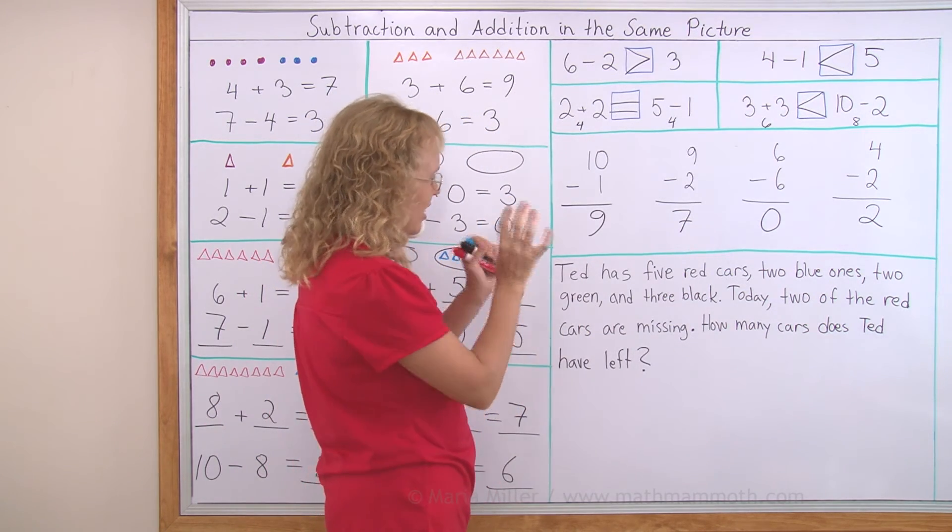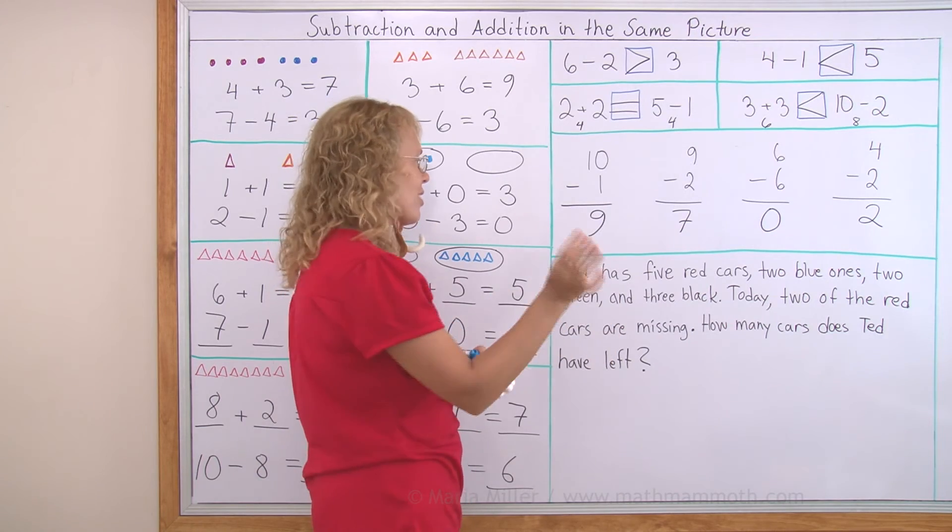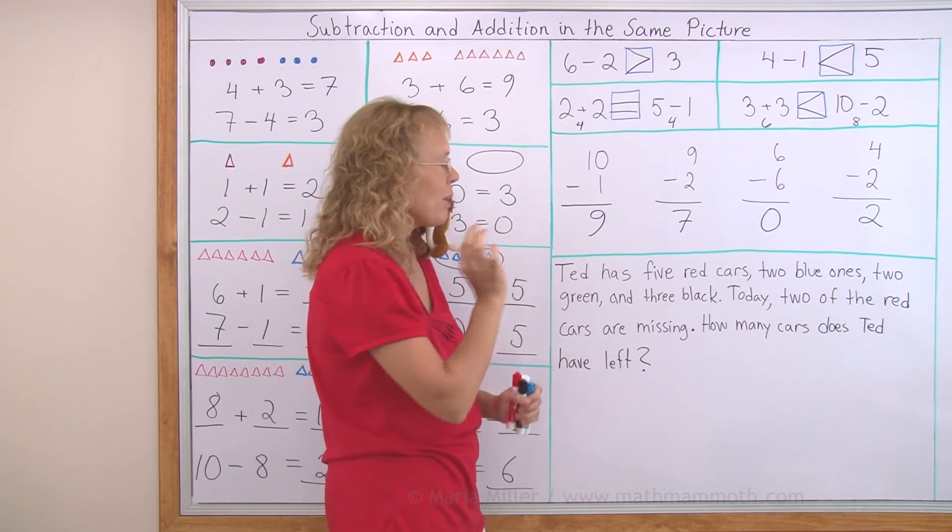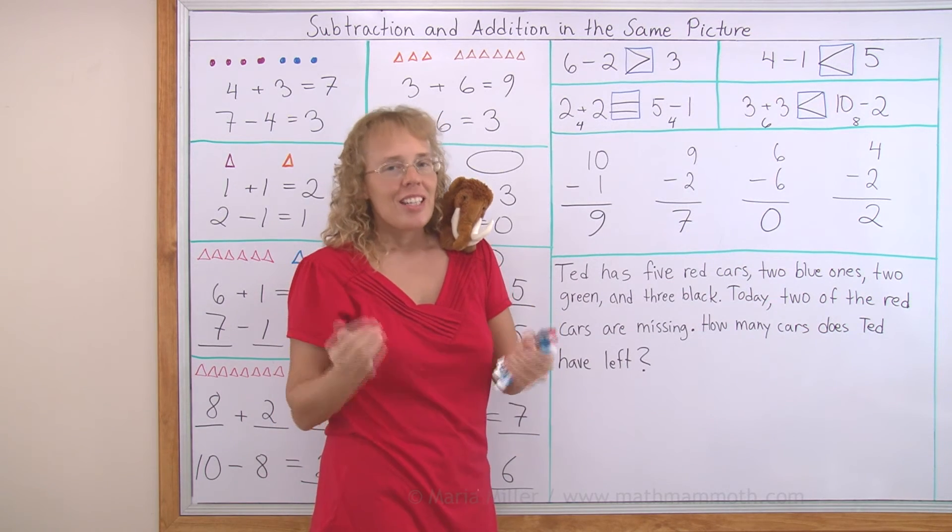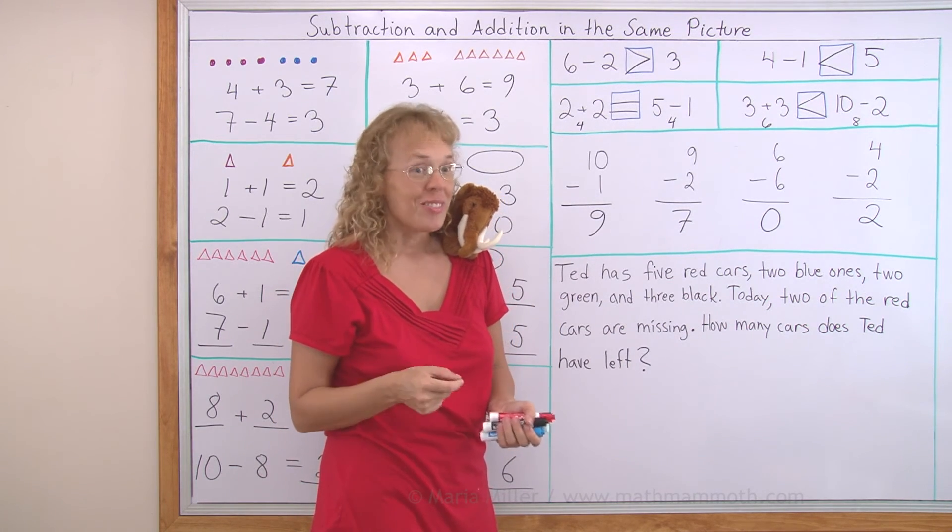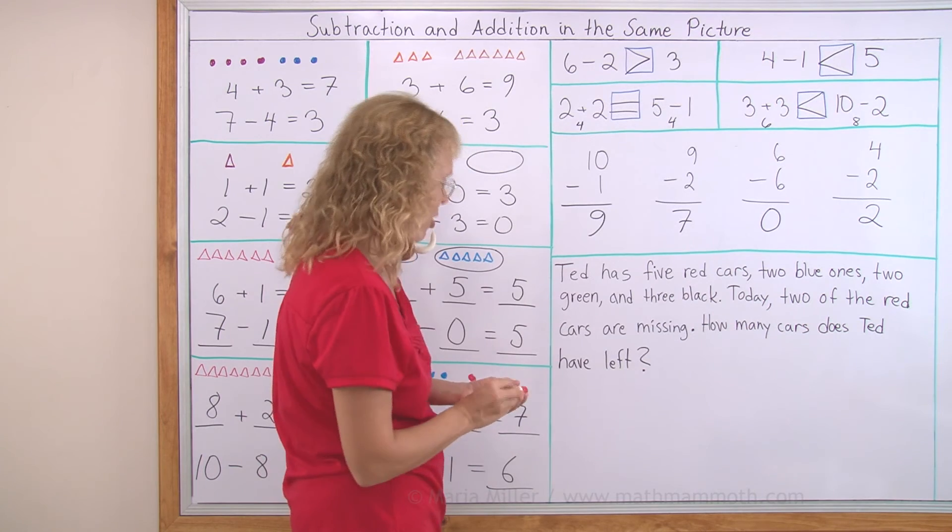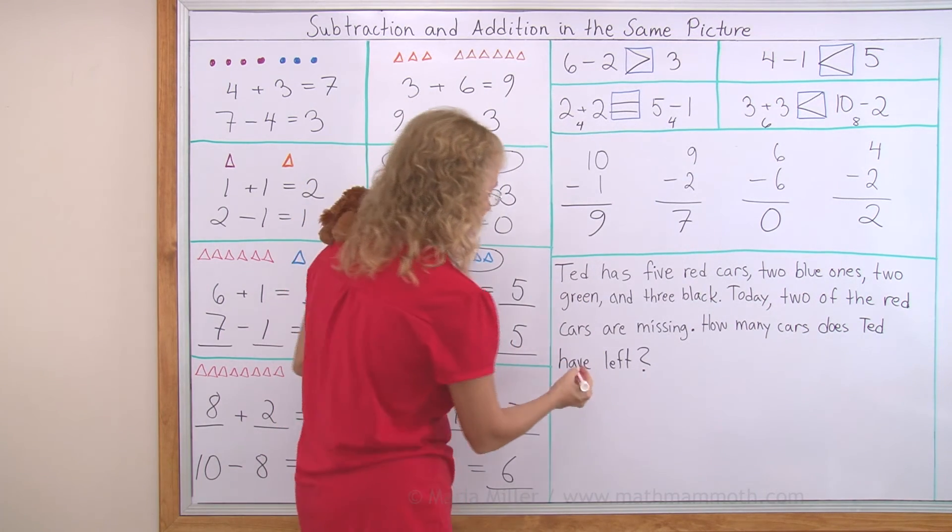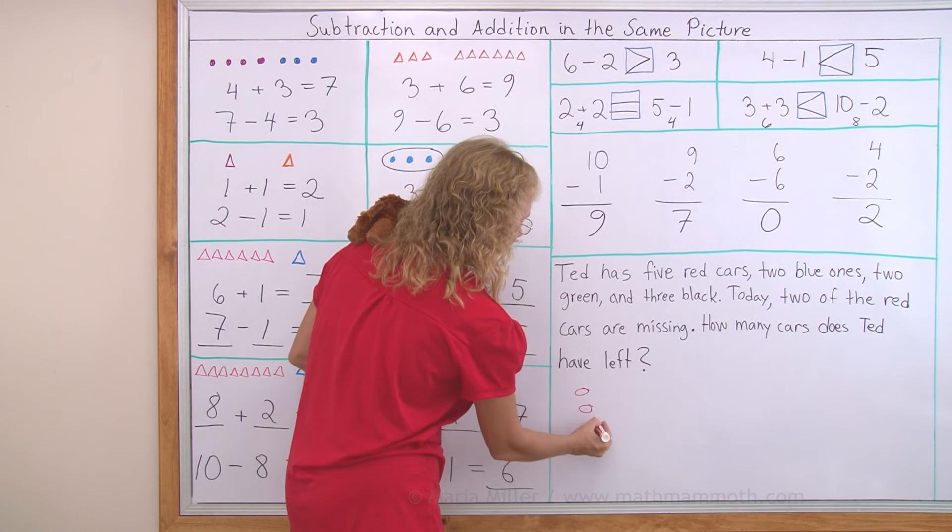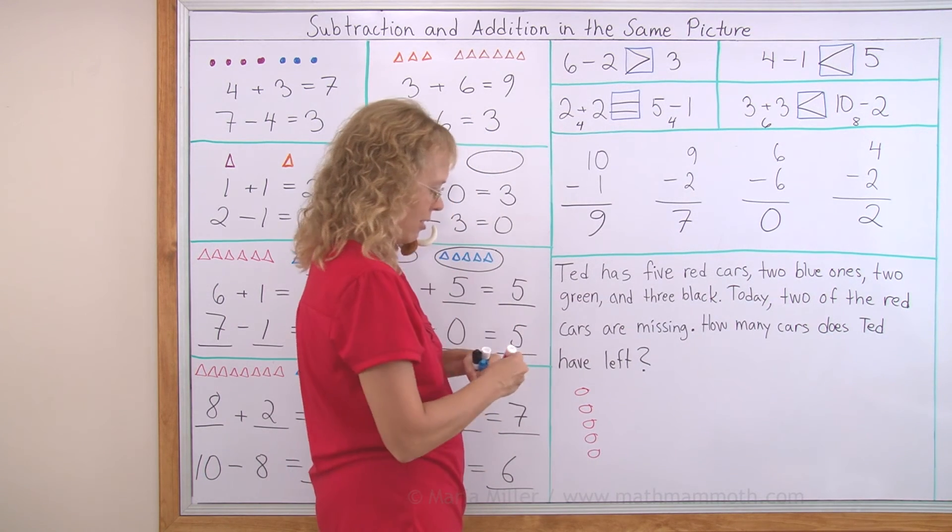Now, Ted has five red cars, two blue cars, two green cars and three black cars. And today, two of the red cars are missing. The idea to help you is that you can draw. You can draw this situation. Five red cars. Now, I'm not going to draw cars because it would take me such a long time. I'm just going to draw something. These symbolize cars.